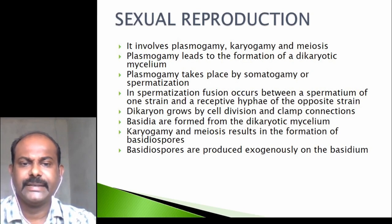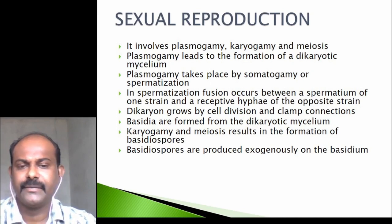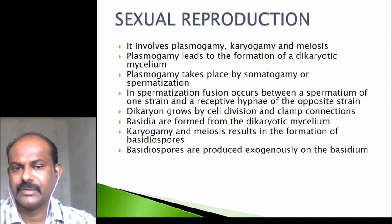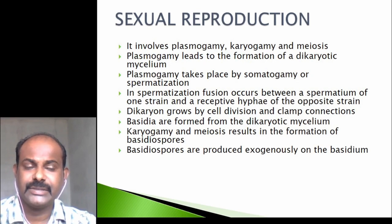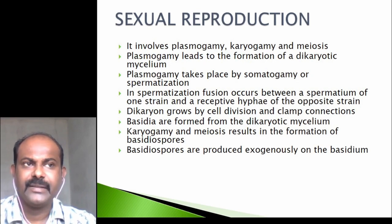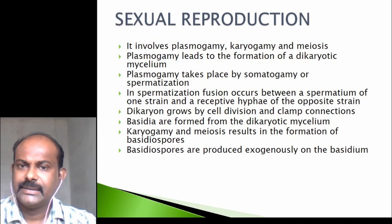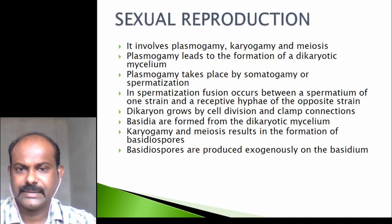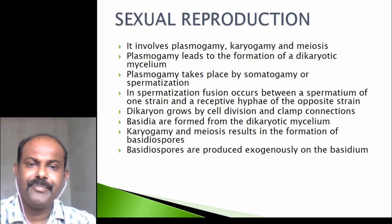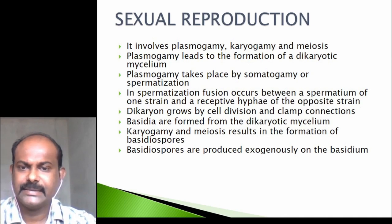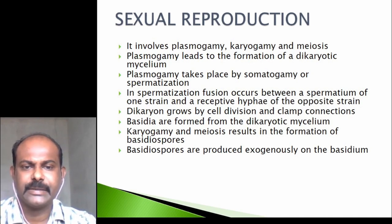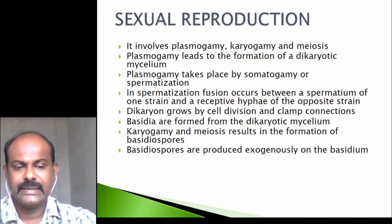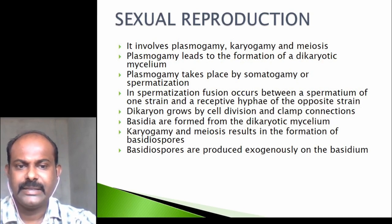Basidiospores are different from ascospores in the fact that basidiospores are produced exogenously on the basidium, whereas ascospores are produced endogenously inside the ascus. This is one of the major differences between ascomycetes and basidiomycetes: in basidiomycetes, the basidiospores are produced exogenously on the basidium.